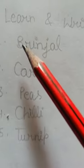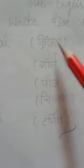First we will read and learn five vegetable names. First, B-R-I-N-J-A-L, brinjal. Brinjal means bangan.